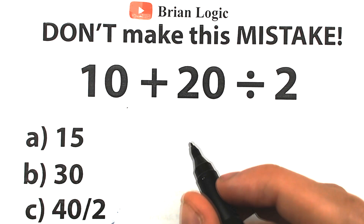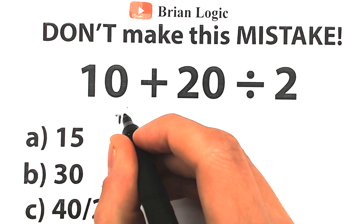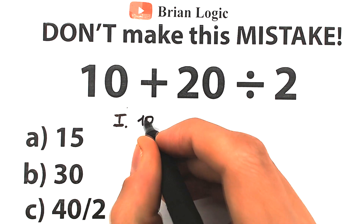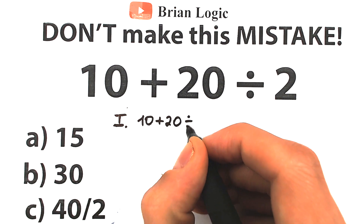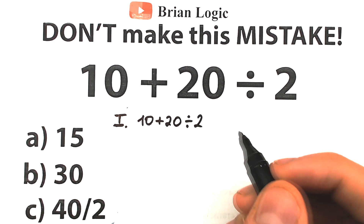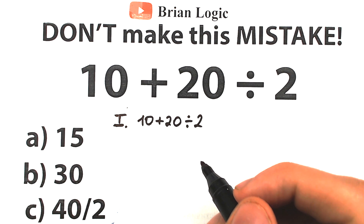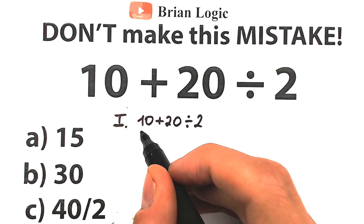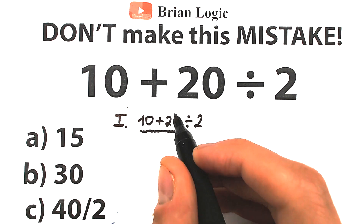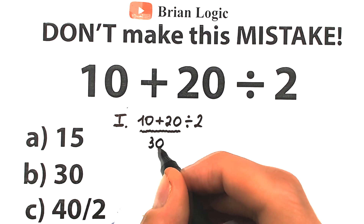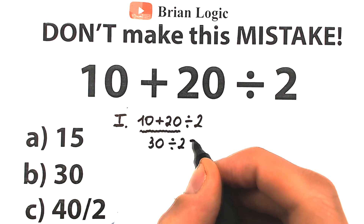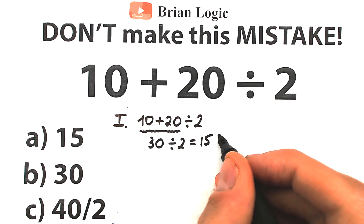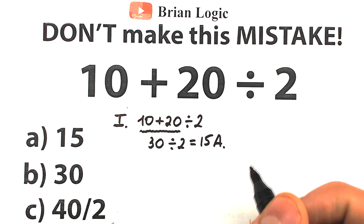There are two types of students. The first type of students solve this question like that — this is our first interpretation. We have 10 plus 20 divided by 2. One part of students want to solve this problem randomly; they don't know about order of operations. They start with the addition on the left-hand side: 10 plus 20 equals 30, and then 30 divided by 2 equals 15. So they say the correct answer is 15 — this is option A.